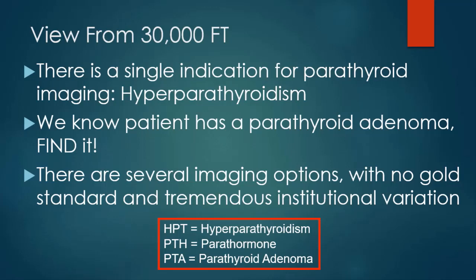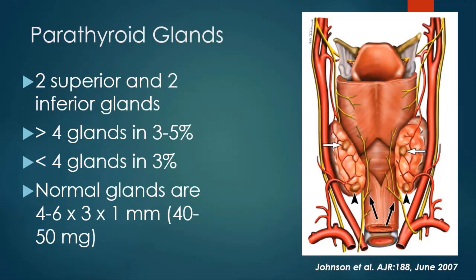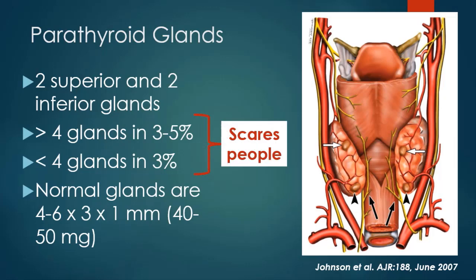A brief word about the parathyroid gland. There are two superior and two inferior glands in a standard human being. People may have more than four glands, and people may have less than four glands. The normal parathyroid glands are quite small, shaped like little discs or frisbees. I would like to call your attention to the close proximity of the inferior glands, typically with the recurrent laryngeal nerves.